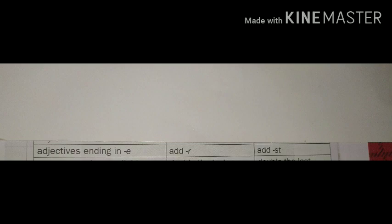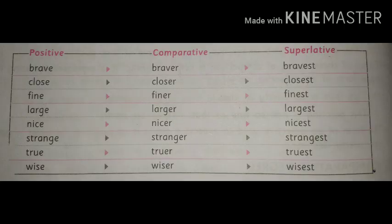The third rule is: adjectives ending in E should be added with R in the comparative degree, and in the superlative degree they should be added with ST. Now we will see some examples that have E in their ending.